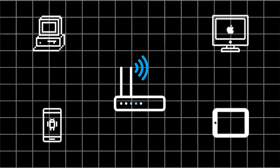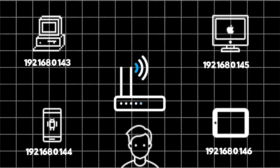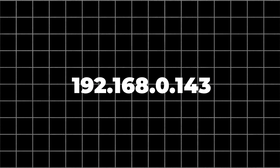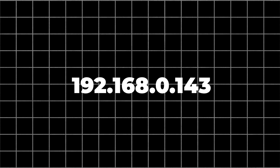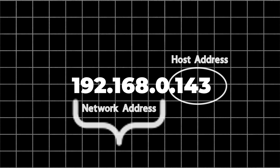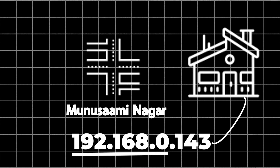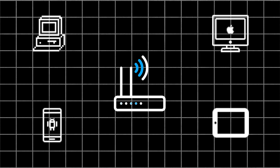Let me give you an example. A local IP address looks something like 192.168.0.143. In this, the first part is constant and the same for all devices on your network, but the last part differs per device. Think of the first part as your street name and the last part as your house number — that's how devices on the same Wi-Fi are identified.